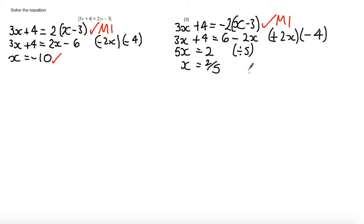Finally, if you've got x equals minus 10 and x equals 2 fifths, you get the answer mark for the third mark. I hope that solution made sense and you were able to follow how to mark it.